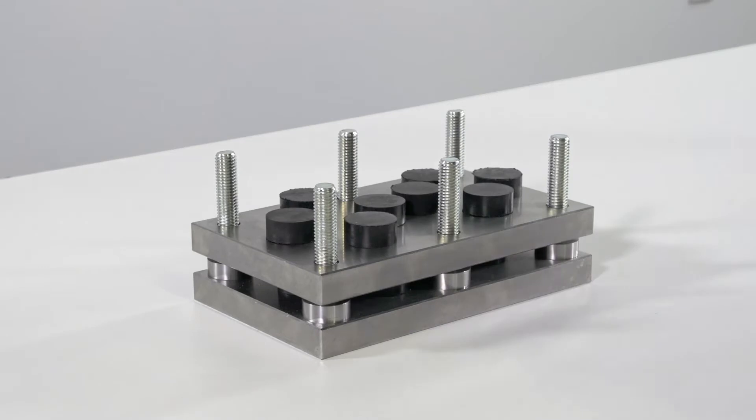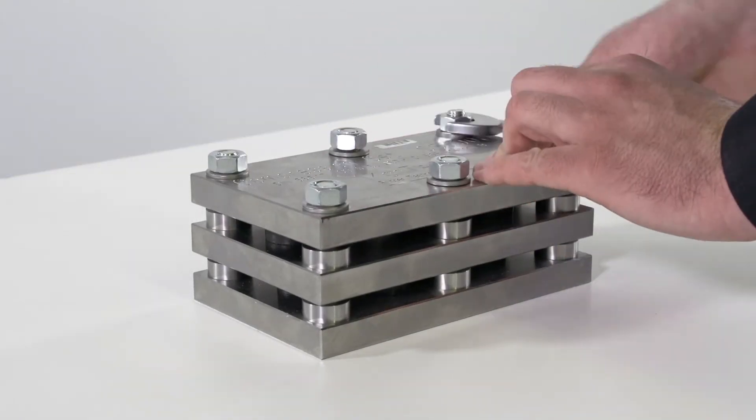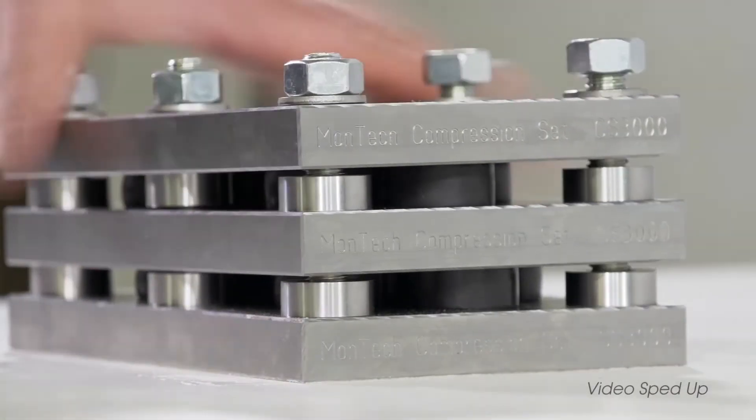The CS3000 works by compressing samples between two flat parallel plates for a specified duration of time and with a specified temperature to show a material's ability to return to its original thickness.